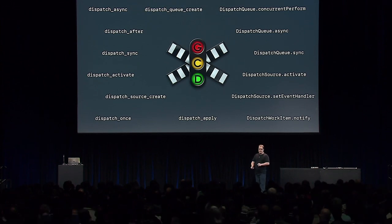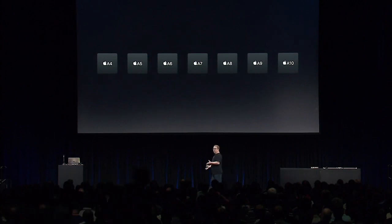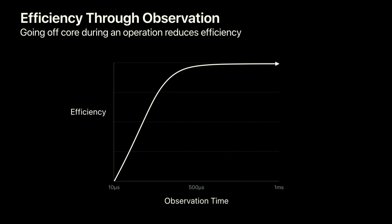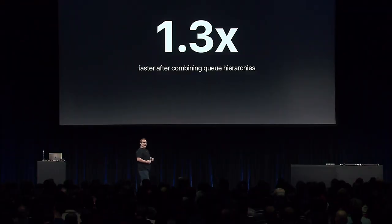Let's get started by looking at our hardware. The chips in our devices have been getting faster and faster over time. However, much of the speed is not just because the chips themselves are getting faster, but because they're getting smarter about running your code and learning from what your code does over time. However, if your code goes off-core before it's completed its task, it may no longer be able to take advantage of the history that core has built up, and you might leave performance on the table when you come back on-core. We've even seen examples of this in our own frameworks.